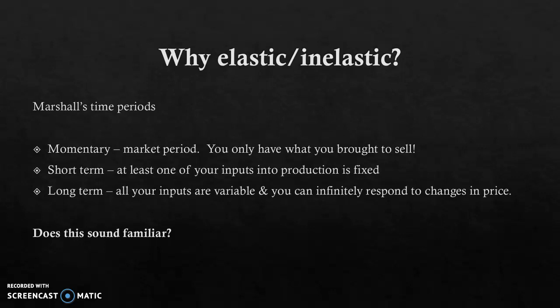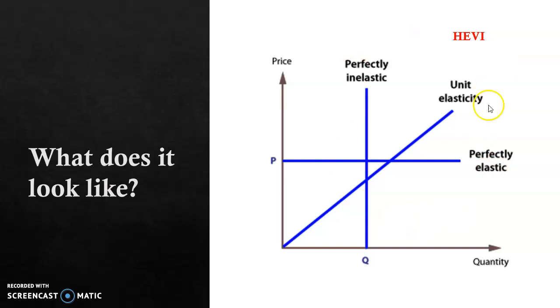This does relate to marginal cost, supply, and the idea of diminishing returns. You don't have diminishing returns in the long run because you can theoretically infinitely change your production in response to price changes. This is what's called Marshall's time periods. Perfectly inelastic supply is the market or momentary period — you can only supply what you brought. In the short term it becomes more elastic, and in the long run you can buy neighbouring farms to expand operations.